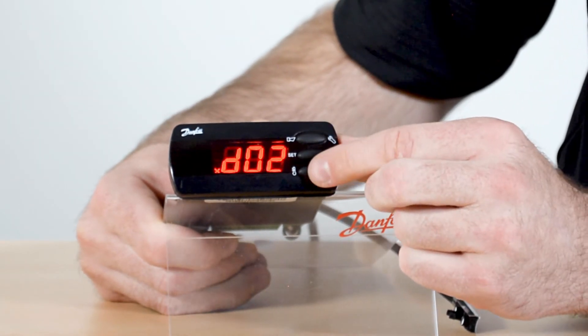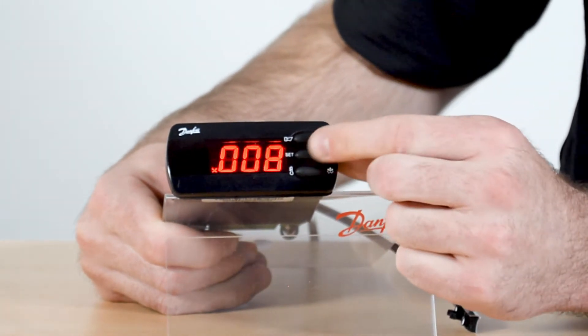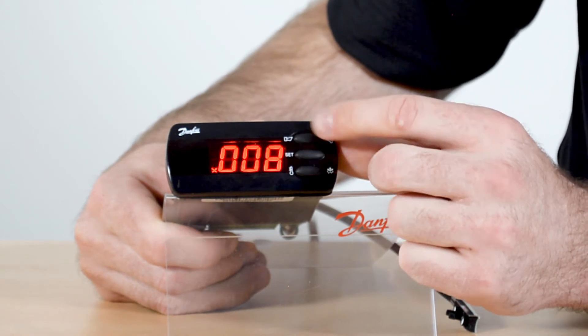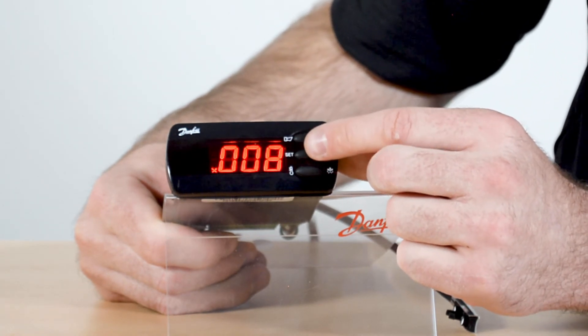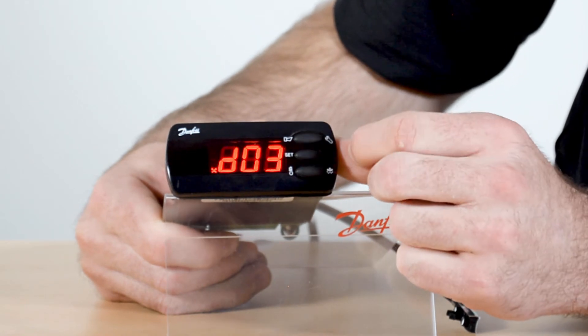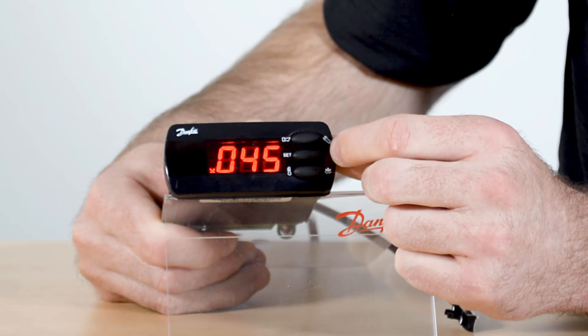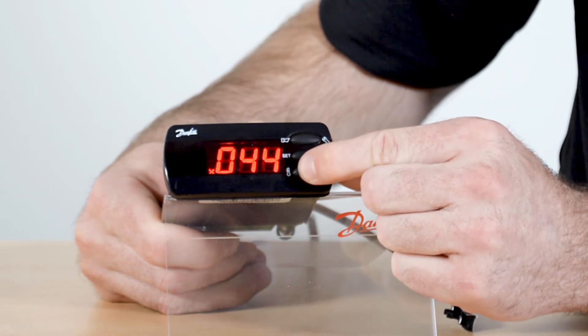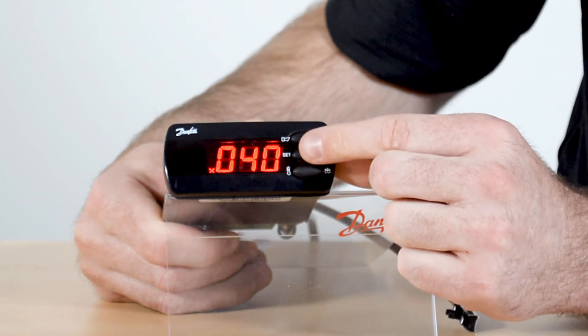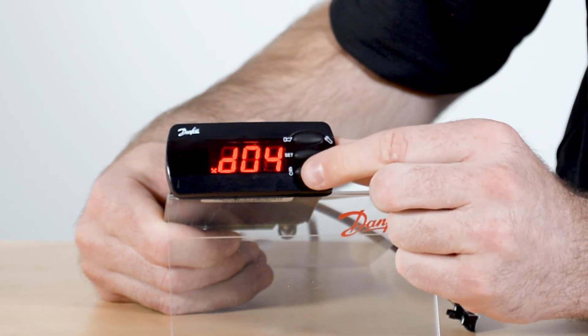Go ahead and set that, go down to D03 which is our defrost interval. This is the number of hours between the defrost, so eight hours will give us three defrosts a day. D04 is the max defrost time in minutes, so this is where you set how long you want your maximum defrost to run.